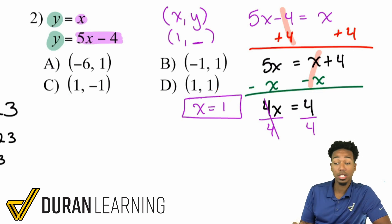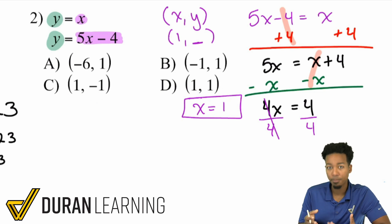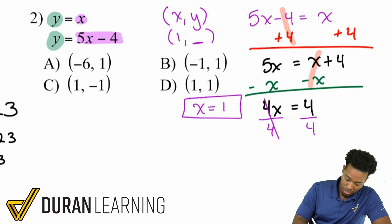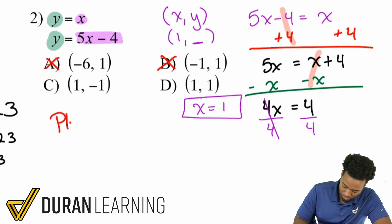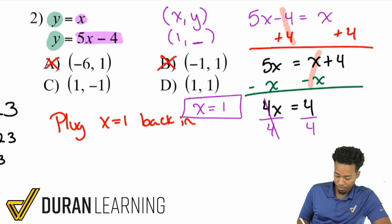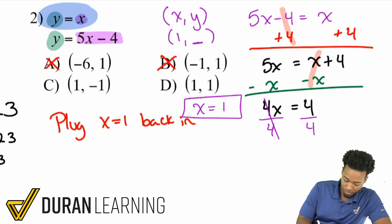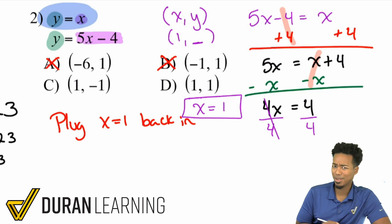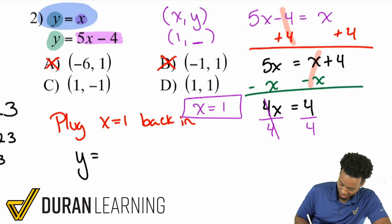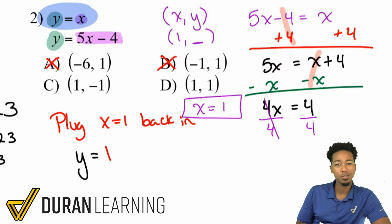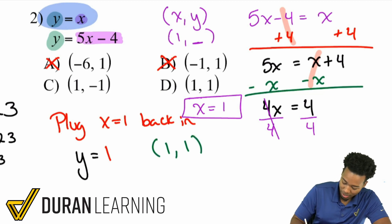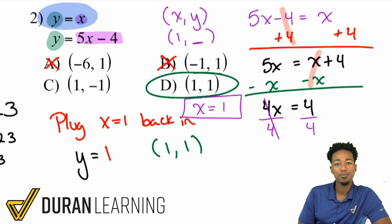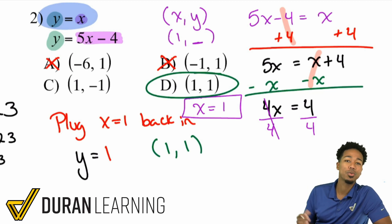We plug x back into either equation. The first equation, y equals x, is the easiest — plug in 1 and y equals 1. So the answer is x equals 1, y equals 1, which is answer choice D. That one was simple because y equals x, so plugging in gives the answer right away.